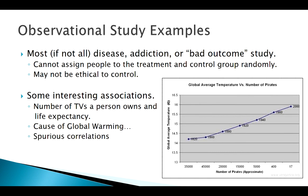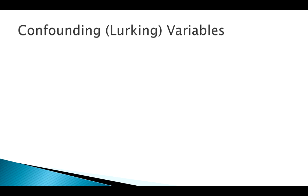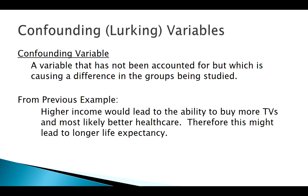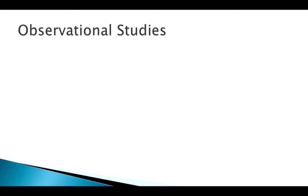Obviously these are silly examples — they're called spurious correlations. Observational studies can find interesting associations, but you can also find spurious ones. What causes these? The presence of what's called a confounding or lurking variable — something going on in the background that we may not have accounted for. In the TV example, the lurking variable is likely income level: the more money you have, the more TVs you buy, and the better access to healthcare you have. So there was an association, but one isn't necessarily causing the other.